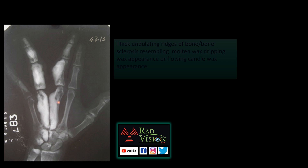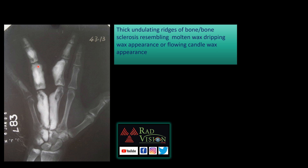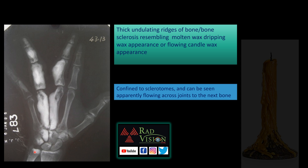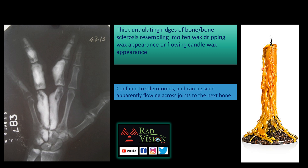The next case shows thick undulating ridges of bone sclerosis typically involving the metacarpals, carpal bones, and phalanges. This is in a sclerotomal distribution and crosses joints to involve adjacent long bones, mimicking a candle wax appearance.